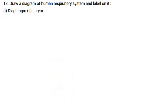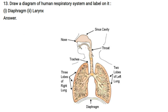Draw a diagram of the human respiratory system and label the diaphragm and larynx. Starting from the nose and sinus cavity, we have the throat with pharynx and larynx, then the trachea. The right lung has three lobes and the left lung has two lobes. Below these is the diaphragm.